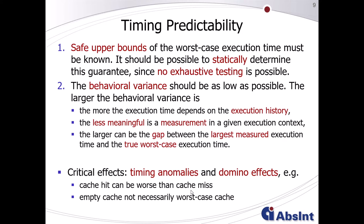To determine a safe but precise worst-case execution time of a task, exhaustive testing is not possible since nobody knows the worst-case input leading to worst-case execution behavior, and one does not know when to stop testing activities. It should be possible to statically determine this timing guarantee and compute safe upper bounds. The behavioral variance should be as low as possible, because the larger the variance, the more execution time depends on execution history, and the larger can be the gap between the largest observed execution time and the true worst-case execution time.